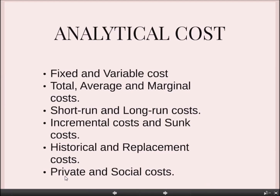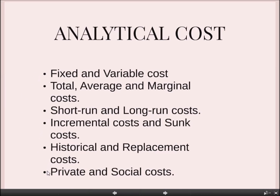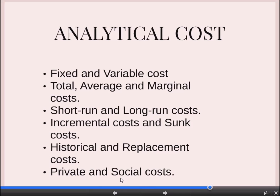Last but not the least is private and social cost. Private cost includes all the costs we have studied so far — those which are actually incurred or provided by a firm on the purchase of goods and services. Social cost, on the other hand, refers to the total cost which is borne by the society due to the production of a commodity. For example, natural resources used by a production unit free of cost, along with air pollution and water pollution that causes the common people to suffer, represent social cost.